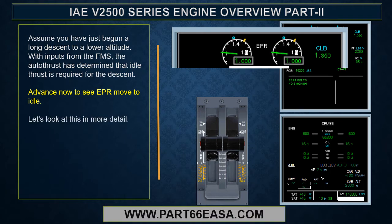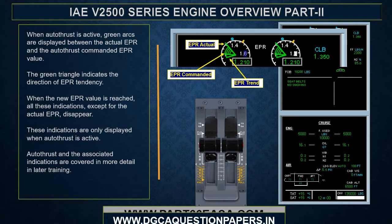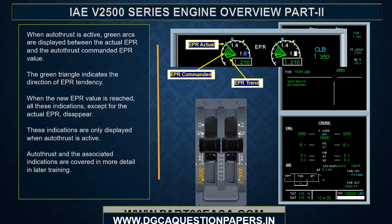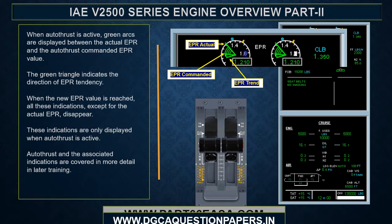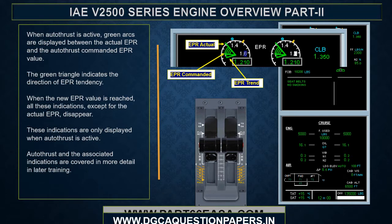When autothrust is active, green arcs are displayed between the actual EPR and the autothrust-commanded EPR value. The green triangle indicates the direction of EPR tendency. When the new EPR value is reached, all of these indications except for the actual EPR disappear. These indications are only displayed when autothrust is active, and are covered in more detail later in training.